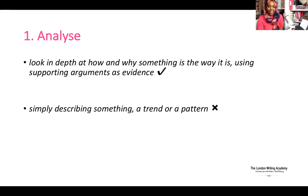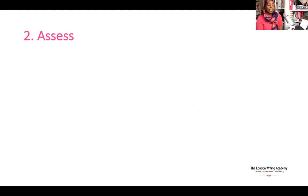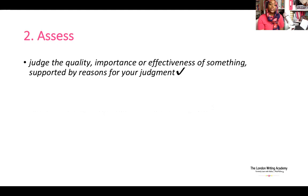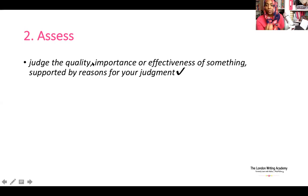The second instructional verb is assess. You'll often be given a statement and at the end it will say 'assess,' or the verb may come at the beginning of the sentence. Assess requires you to judge the quality, importance, or effectiveness of something, supported by reasons for your judgment. Again, you can see this is a repeating pattern — you need to bring in evidence from your reading and show that you have engaged with the literature.